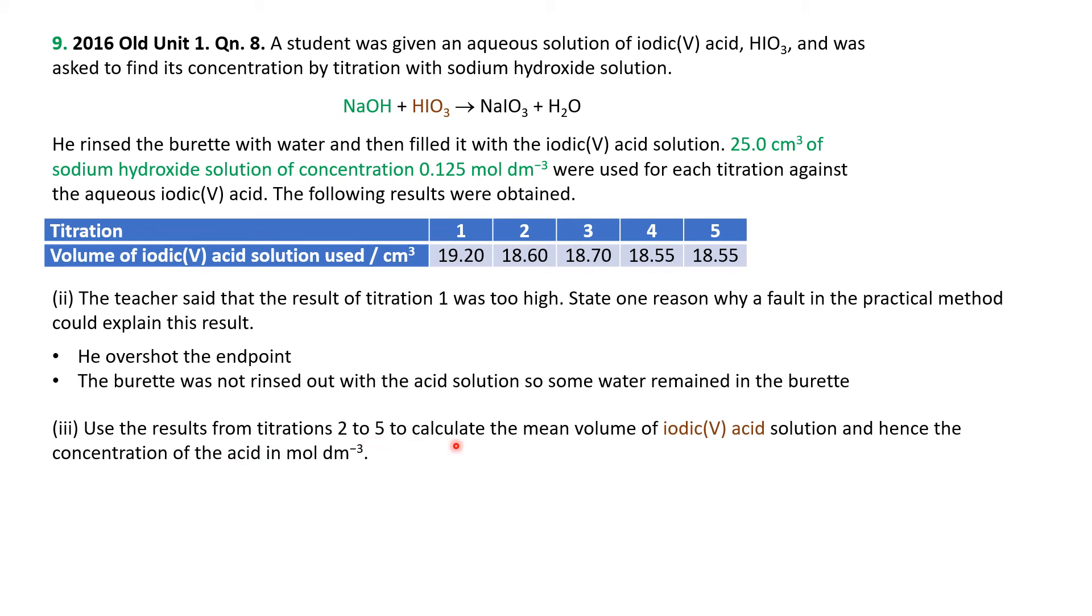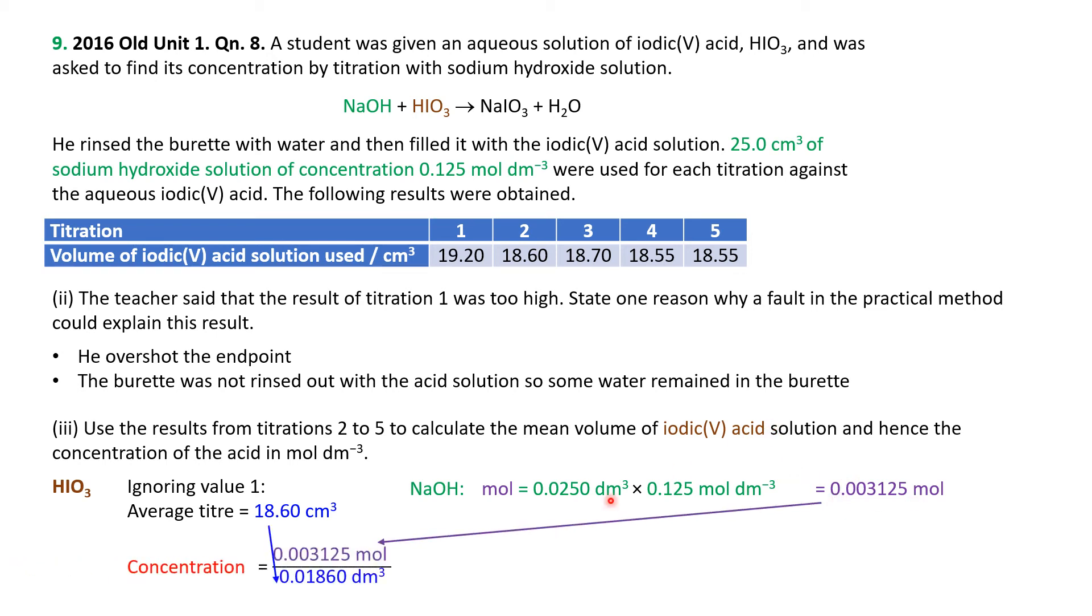Now, use the results from this titration to calculate the mean volume of the iodic acid solution, and hence the concentration of the acid in moles per cubic decimeter. Ignoring value 1, the average is 18.6 by adding all these up and dividing by 4. Sodium hydroxide, we took the 0.025 cubic decimeters, and we know the concentration was 0.125 moles per cubic decimeter, so that tells us the moles of the NaOH. It was a one-to-one reaction, so the moles of NaOH is the same as the moles of the HIO3, and we already know the volume that contained that many moles of HIO3, thus giving us 0.0168 moles per cubic decimeter for the concentration. Pretty straightforward calculation.